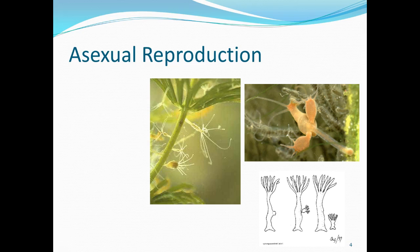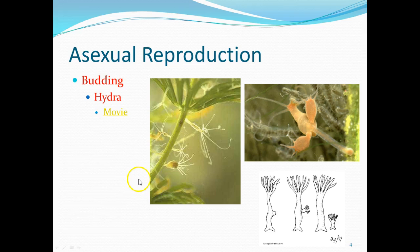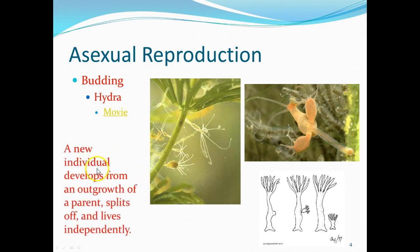A slightly more complex form of asexual reproduction is what's known as budding. In multicellular organisms — the best example is something called a hydra — a new individual actually develops from an outgrowth of the parent. The organism starts making a little growth, which turns into a copy of the hydra, and this eventually just pops off, lands next to it, and starts growing independently.